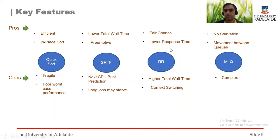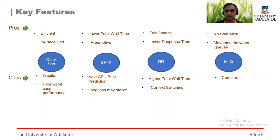We have used a round-robin queue as well. It gives a fair chance to each player and it also lowers response time. However, if the time quantum is not wisely chosen, it can increase total wait time and context switching. Finally, we have used a multi-level queue structure because it eliminates the problem of starvation and allows flexible movement between different queues so that we can maintain our priorities.